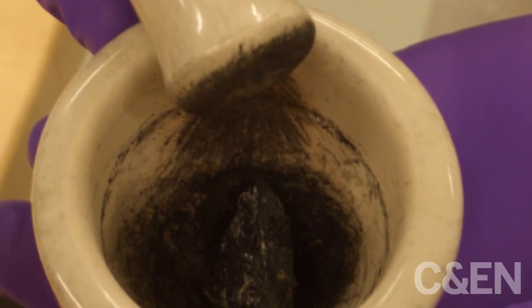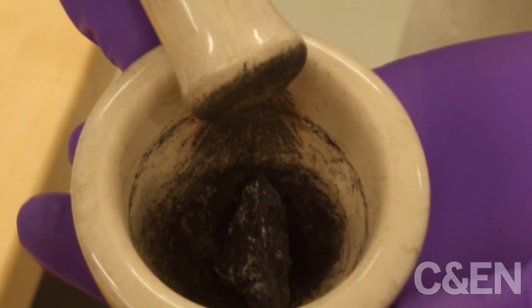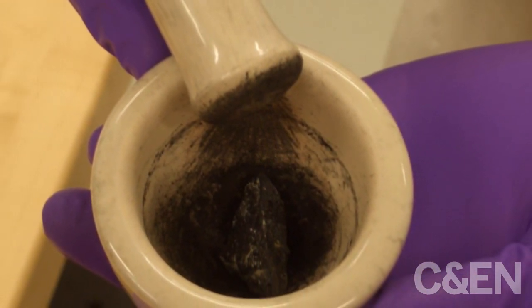We do that by taking a piece of the meteorite and crushing it up in a simple mortar and pestle to get the meteorite into a fine powder.